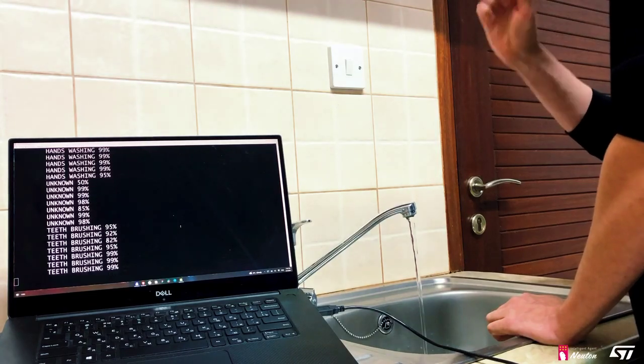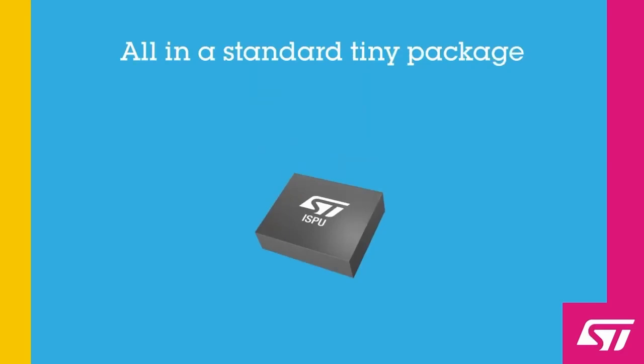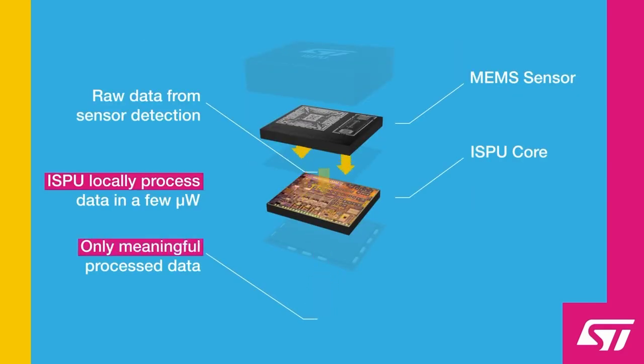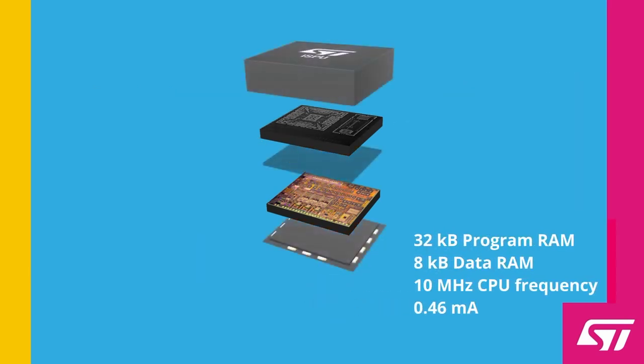Our solution is not only sophisticated in AI analysis but also energy efficient. For this, the model was fitted and running on the ultra-low-power ISPU sensor from STMicroelectronics with power consumption as low as 0.46 milliamp-hours.